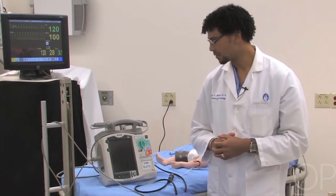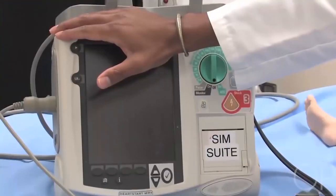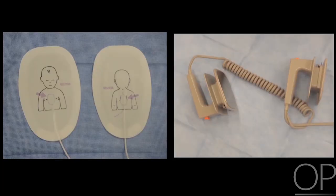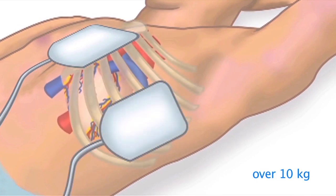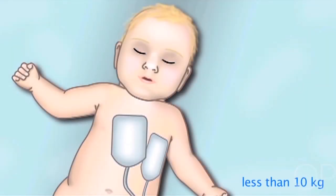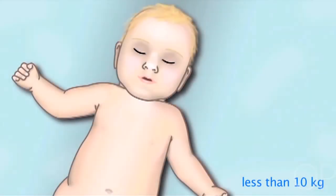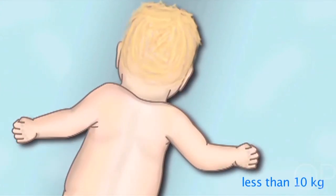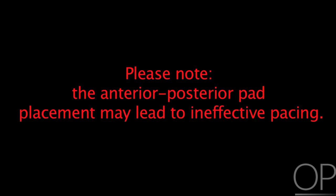The equipment used for transcutaneous pacing interacts with the patient by means of pads or paddles, which are the same as those used for defibrillation or cardioversion. For an adult-sized patient, place pads over the mid-sternum at the base of the heart and the mid-axillary line over the apex. If you have a pediatric-sized patient or if the pads come into contact with each other when placed anteriorly, use anterior-posterior pad placement — one pad anteriorly in the mid-sternal position and one posteriorly in the intrascapular position. Note that anterior-posterior placement may lead to ineffective pacing.